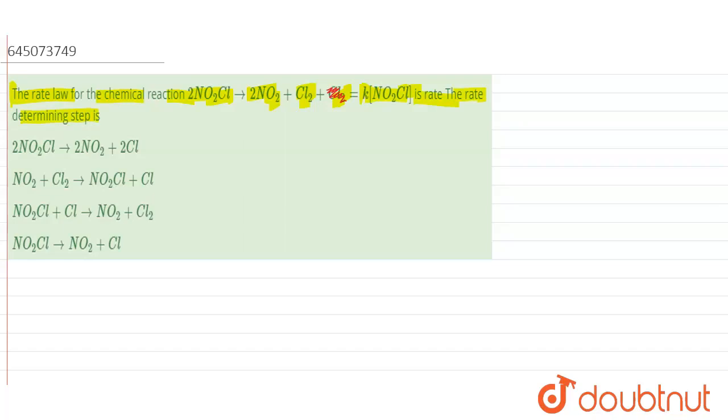Now, over here the reaction which is given to us is 2 times NO2Cl dissociates to give 2NO2 plus Cl2. And the rate is given by R equals, or you can say rate equals K times NO2Cl.